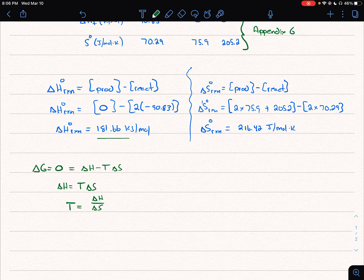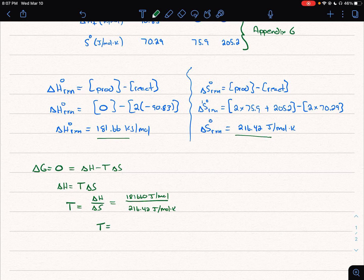So now we can substitute in our delta S terms, paying attention to our units. So I'm going to convert our units on one of these. It doesn't matter which one, but remember we have kilojoules and joules. So you can do this either way. I'm going to go to joules and say this is now 181,660 joules per mole, and that's divided by 216.42 joules per mole times Kelvin. And so what we get from that is a temperature of 839 Kelvin.